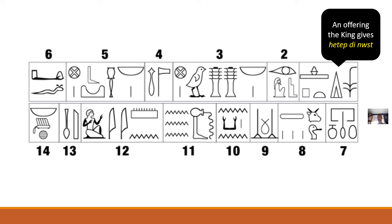The Egyptian language valued placing the most important, most honored sign at the beginning — like the king or a god. This is an honorific device: you can't start this sentence with 'an offering.' You have to actually put the king first in the sentence, because who is the most important thing in this society? That word order itself tells us something profound about Egyptian values.